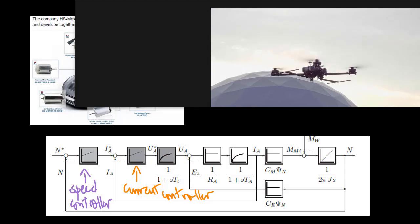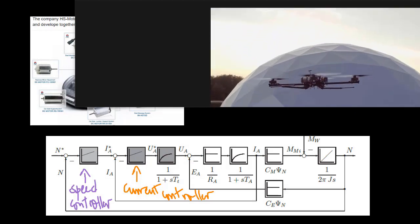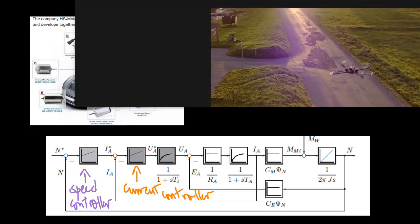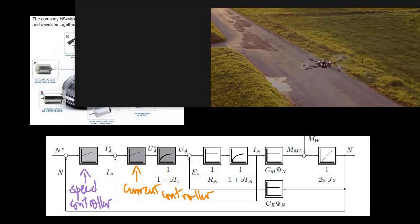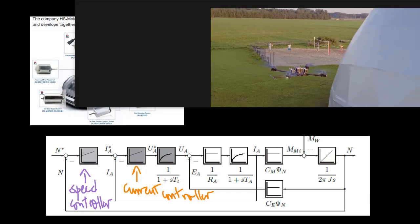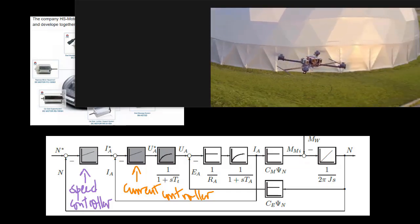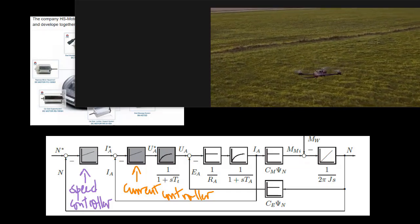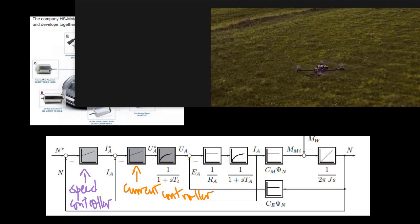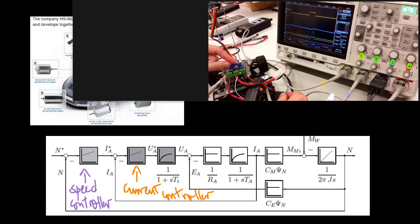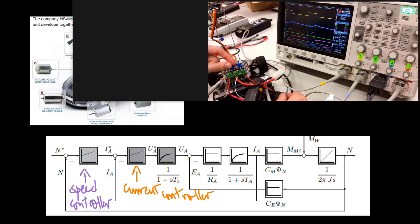The purpose of the first control loop, as described in the last video, is to determine the setpoint of armature current according to a comparison between actual speed and target speed. The purpose of the second control loop is to secure the armature current setpoint, and in doing so, secure the target speed.